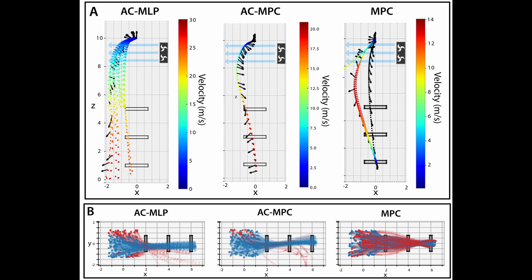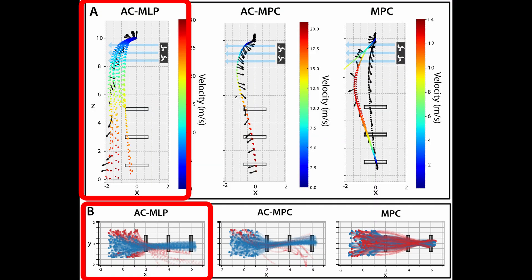We conduct a series of experiments that compare model-free RL, actor-critic MPC, and standard MPC. The experiments show that actor-critic MPC is more robust to situations that drive the system to unseen or out-of-distribution scenarios.